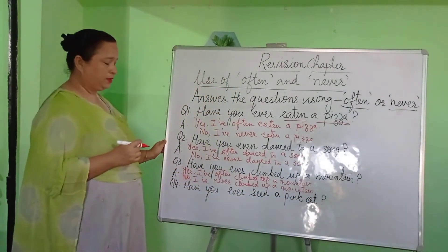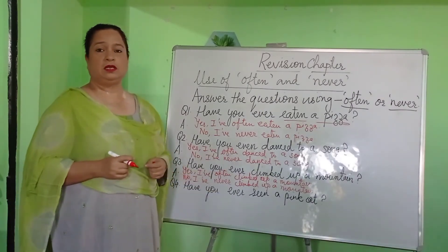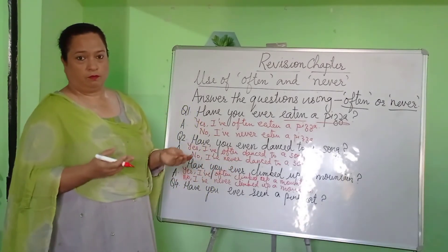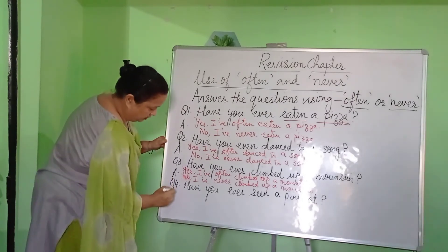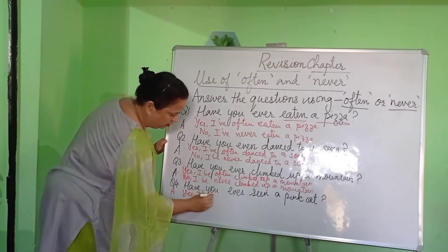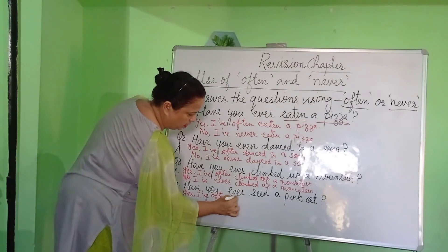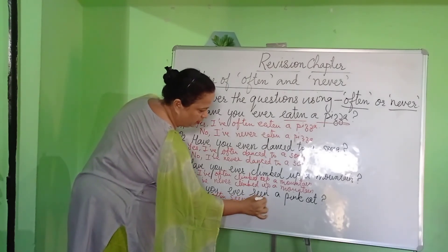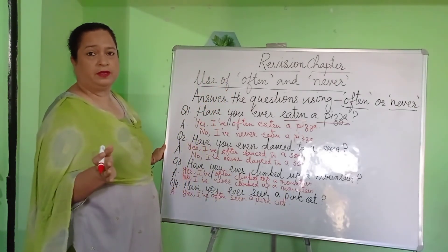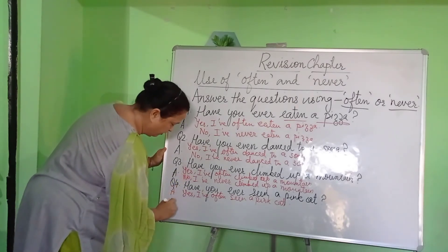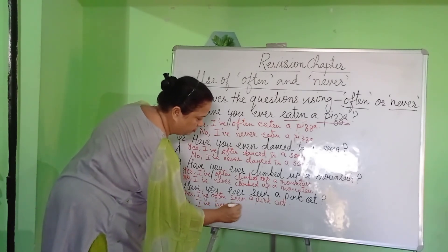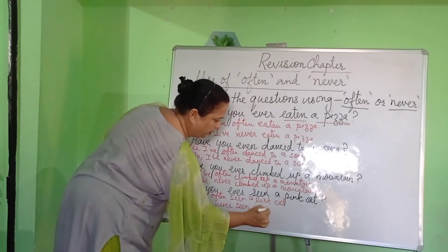So now children, let us have a look at the last question. Have you ever seen a pink cat? Imagine seeing a pink cat! If you have seen a pink cat, you will write your answer beginning with Yes: I have often seen a pink cat — something unusual. Since I have never seen a pink cat in my whole life, I will begin my answer using No. No, I have never seen a pink cat.